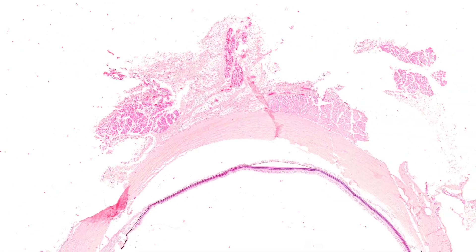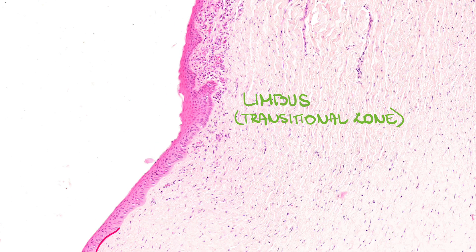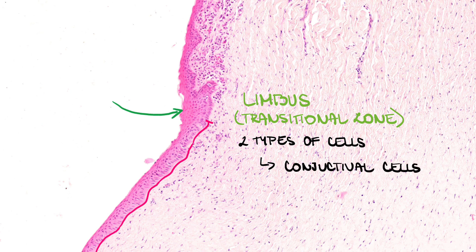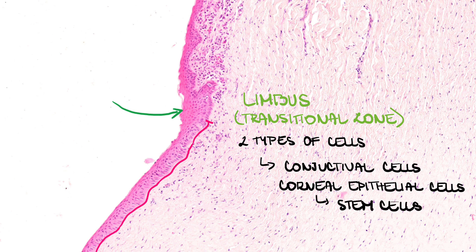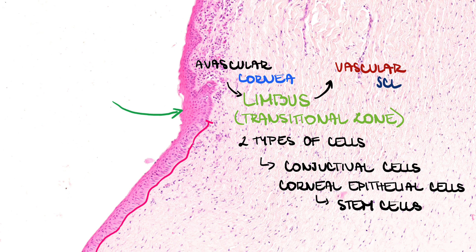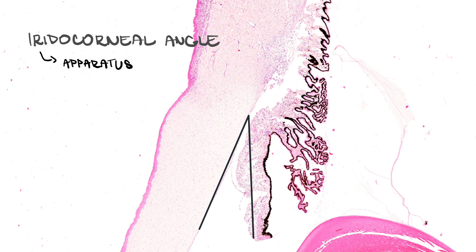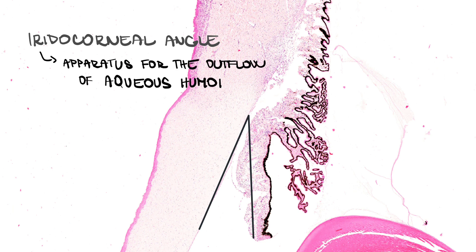Let's go back to the corneal-scleral limbus once again — the transitional zone. Bowman's membrane of the cornea ends abruptly in this place. The surface of the limbus contains two distinctive types of epithelial cells: conjunctival cells and corneal epithelial cells. Don't forget that the basal layer contains corneal limbal stem cells that maintain the corneal epithelia. There is a transition from avascular cornea to vascular sclera. The limbus region, specifically the iridocorneal angle, contains the apparatus for the outflow of aqueous humor, but we will talk about the circulation of aqueous humor in the next video.